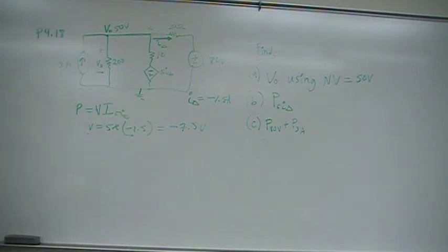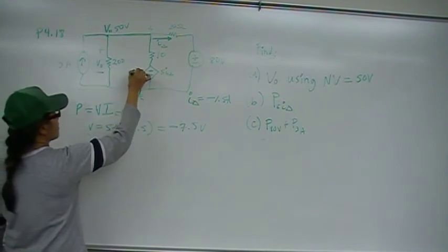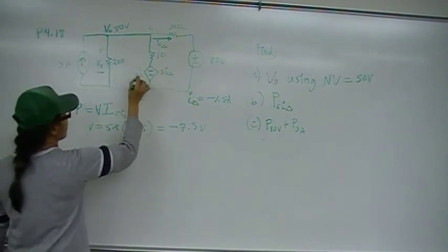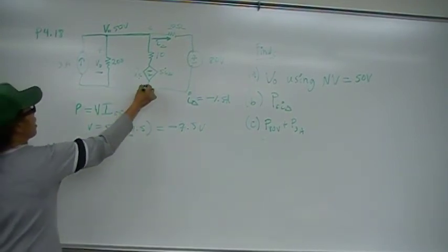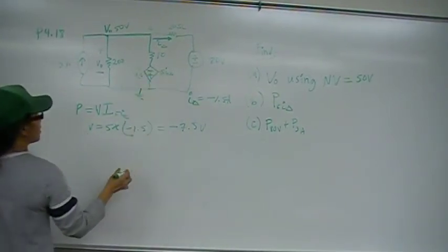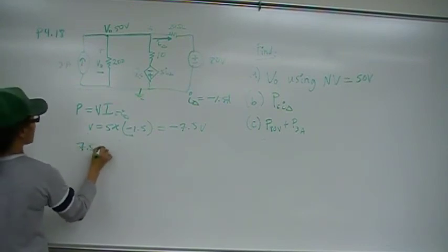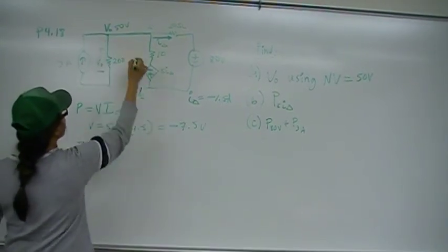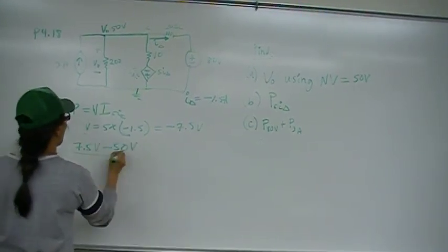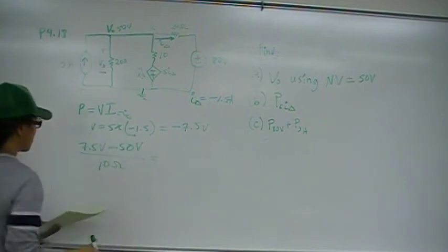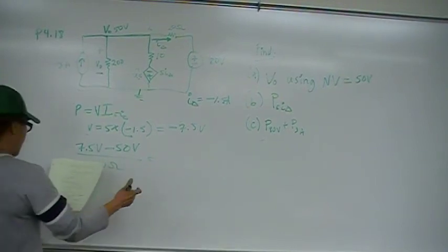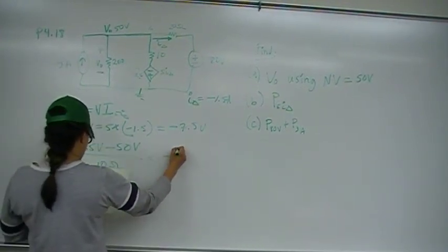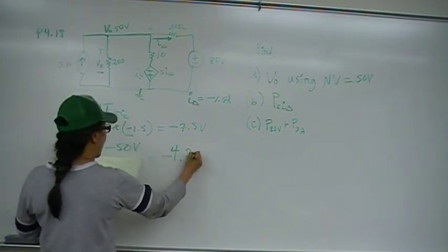So, this drop here is negative 7.5. If I want to go in the positive direction, then, so I want to go in the positive direction, the tail of the arrows here. So, I'm going to go 7.5 volts minus, I want that current, minus 50 volts over 10 ohms. And if you do that, you should, let me just make sure, you should come up with negative 4.25 amps.